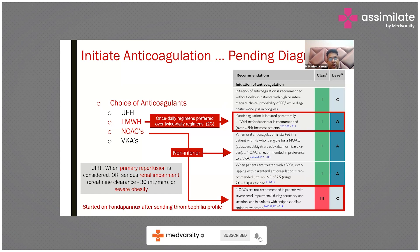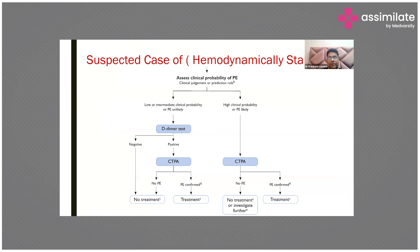We started this patient on fondaparinux after sending a thrombophilia profile. This is the algorithm for hemodynamically stable PE: assess clinical probability first. If low to intermediate probability, do a D-dimer test — if negative, no treatment is required; D-dimer is used to exclude PE in this setting. If D-dimer is positive, perform CTPA; if PE is confirmed, treat; if not, no treatment. If clinical probability is high, go directly to CTPA — if PE is confirmed, treat; if not confirmed, investigate further.